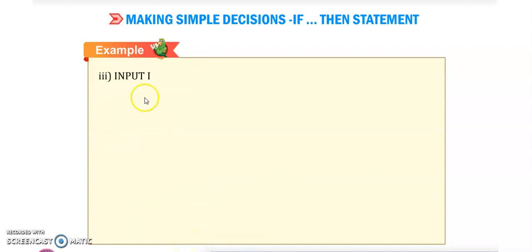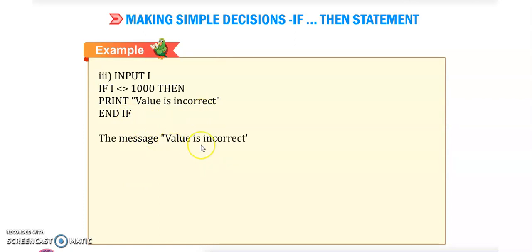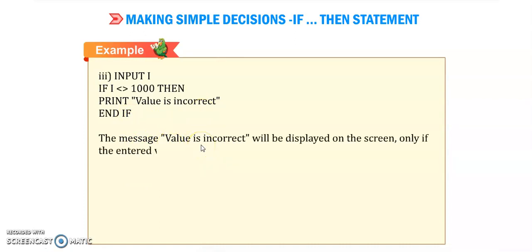Third example: input i — we will input the number while running the program into variable i. It will check if i is not equal to 1000, then it will print 'value is incorrect' and the program will be ended. The message 'value is incorrect' will be displayed on the screen only if the entered value of variable i is not equal to 1000.